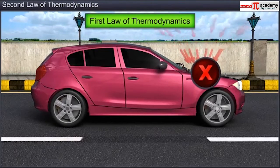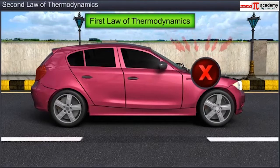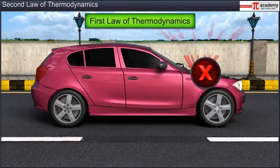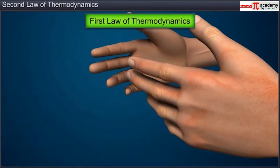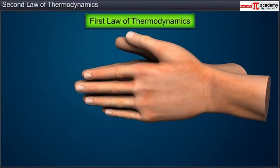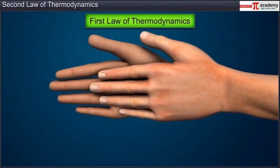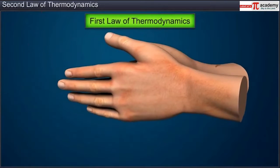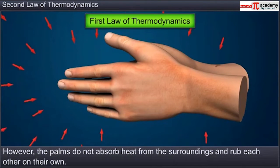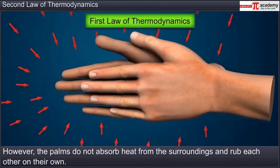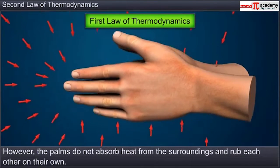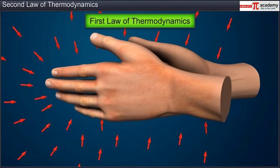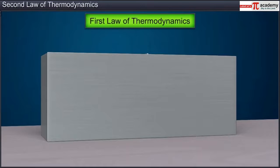There are many processes that are valid according to the first law of thermodynamics but which do not take place on their own. For example, when you rub the palms of your hands together they turn warm; however, the palms do not absorb heat from the surroundings and rub each other on their own.